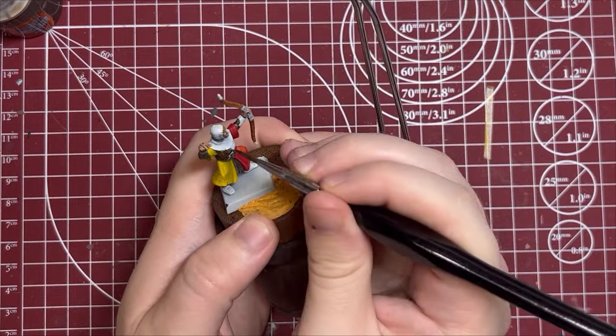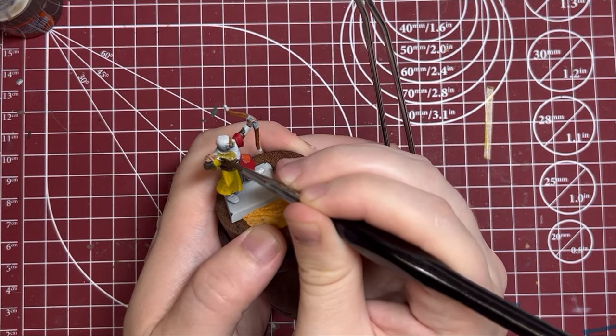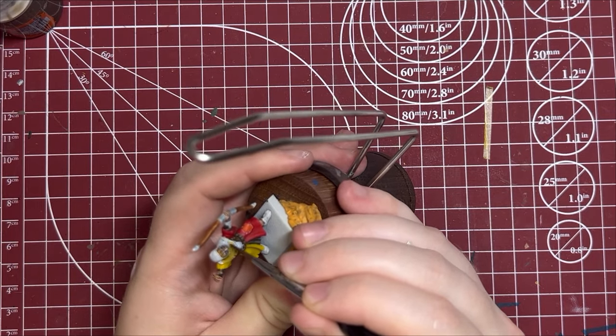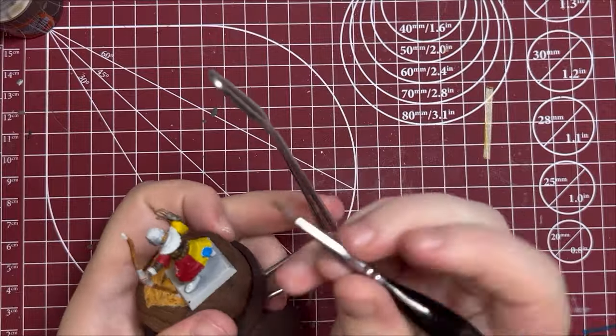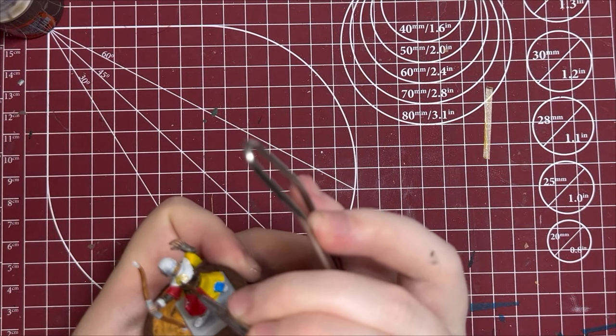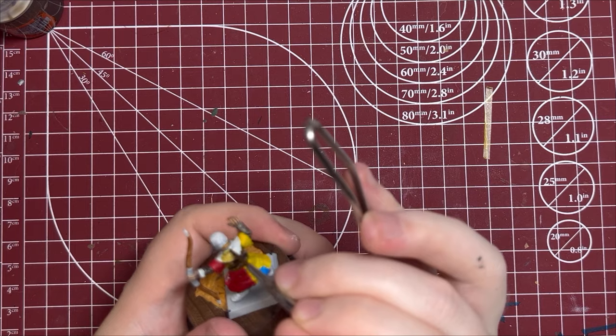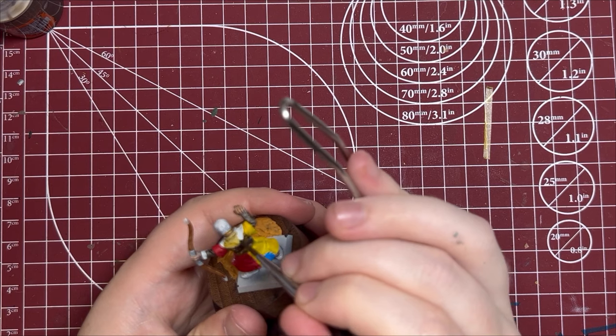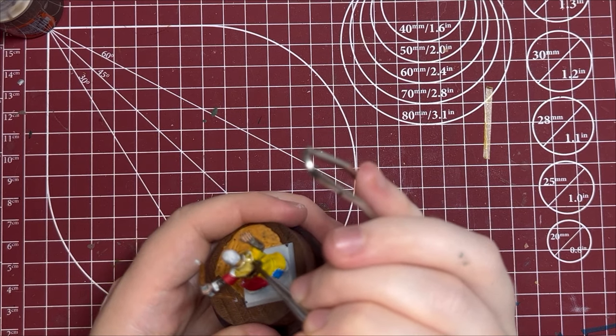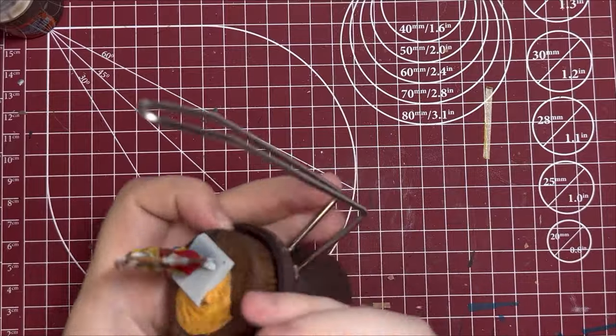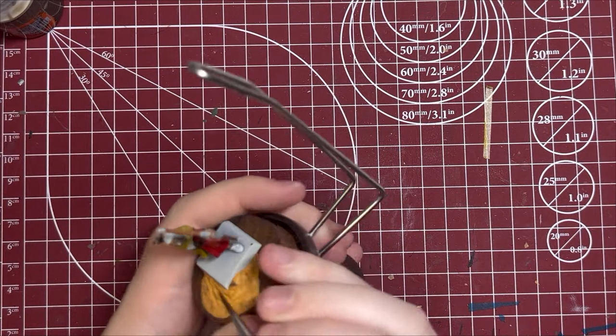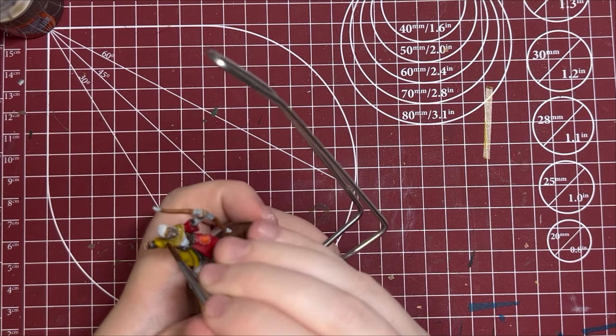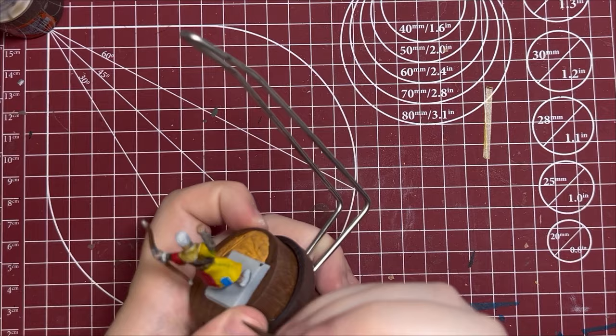Now I'm going to take a different Citadel brown and do the rest of his armor. This is Aggaros Dunes Shade. This is a lighter brown. It's got like a little bit of yellow to it. I like this color a lot. And I just think it adds more interest to the figure to do a lot of different tones of leather, especially as you do it throughout the regiment. And so when you put them all together, it's going to look really, really good.